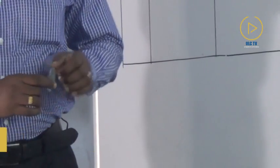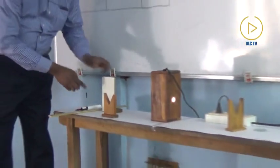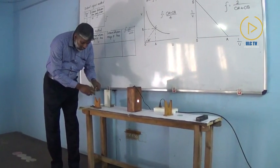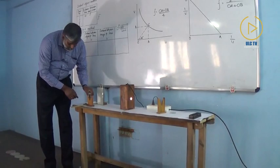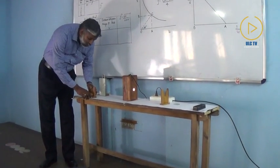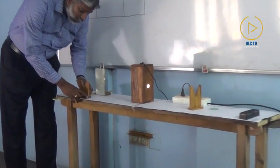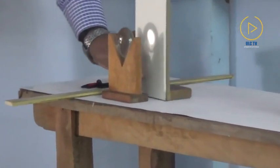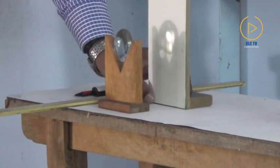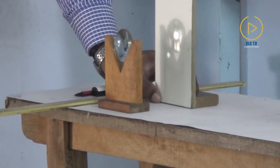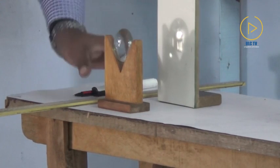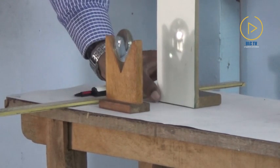First we are doing the distant object method. For that, first draw a line on the table. Then place the lens on the stand and place it at a suitable position on the line. Then the screen is adjusted on the opposite side.